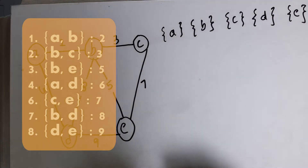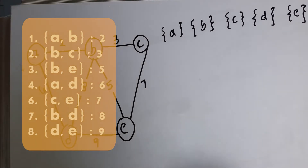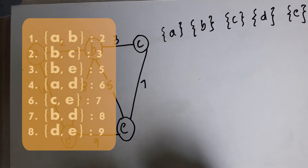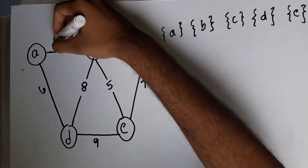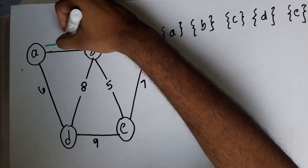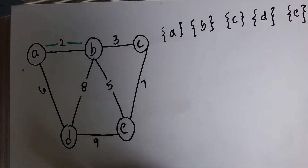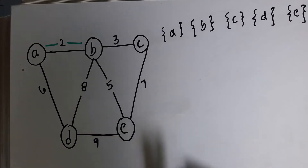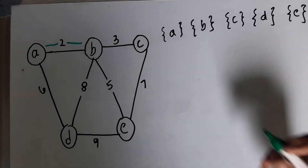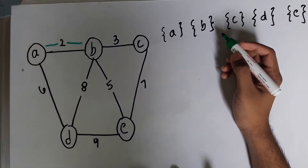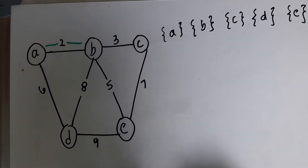Now the actual loop step starts, where we iterate through each edge in our non-decreasing order list. The first edge in that list is edge A to B. We consider this edge and first check if the elements on either side — A and B — belong to the same set or not.